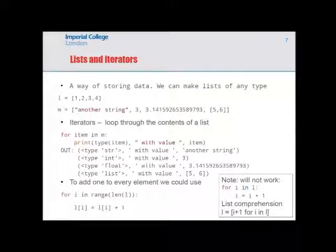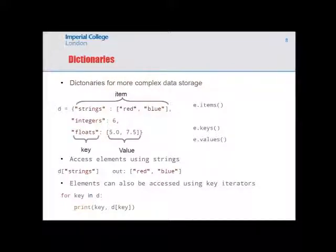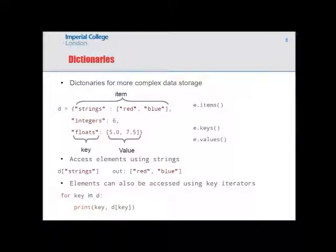Dictionaries are a way of doing more complex data storage. Instead of numeric indices, you use human-readable keys like 'strings', 'integers', and 'floats'. Accessing dictionary['strings'] returns the elements stored under that key. You can also iterate through a dictionary using 'for key in D', printing the key and using it to access the corresponding value.